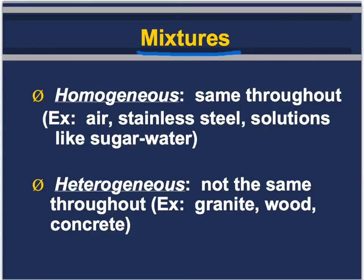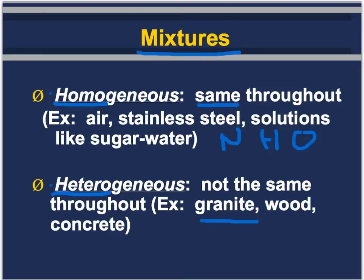Mixtures can also be described as either homogeneous or heterogeneous. In science class it's important to break words down — 'homo' means the same, so in a homogeneous mixture the composition is the same throughout. Examples include air, stainless steel, and solutions. 'Hetero' means different, so a heterogeneous mixture is not the same throughout. Examples include granite, where you can see different types of rock, wood with different layers, and concrete where you can see different layers.